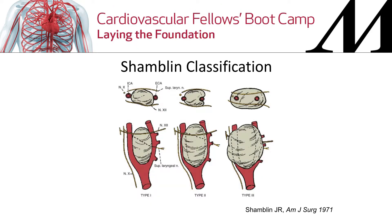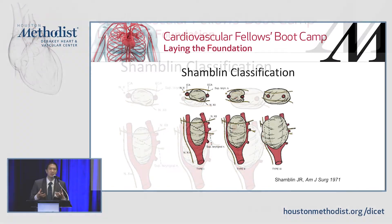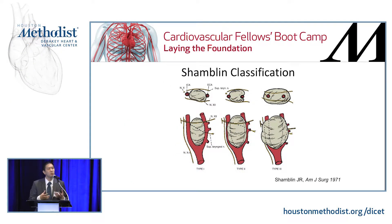No talk on carotid body tumors is complete without mentioning the Shamblin classification system. It's divided into types 1, 2, and 3 based on how difficult the resection will be. Type 1 just splays the bifurcation, giving the classic goblet sign on angiogram, without involving the external, internal carotid, or the nerves. Type 2 involves partial encasement of the external and internal carotid arteries, with nerves generally spared. Type 3 involves complete encasement of the arteries and nerves — where you see the quoted 40% incidence of cranial nerve injury with resection.